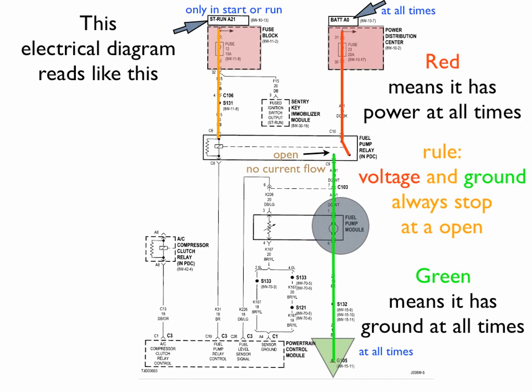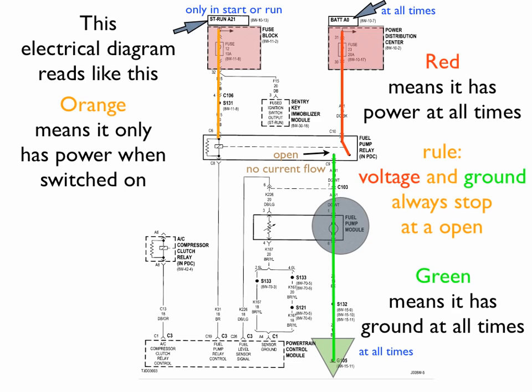Now the next power source over here, the word says start run. That means you only have power if you have switched to the start or switched to the run position. So that is a switched power. So we're going to color it orange. Anything in orange means it only has power when it is switched on or turned on.